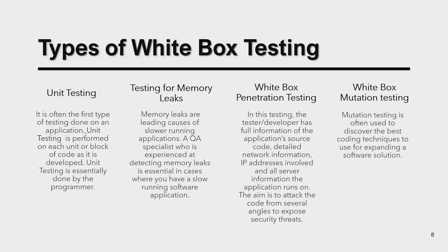In cases of slow-running software applications, white box penetration testing is an important part, where we verify the source code, detailed network information, IP addresses, server information, and certificates. If all that passes, we proceed. White box mutation testing is another important aspect used to discover the best coding techniques — if there is redundant data or unused variables, we remove them from the code.